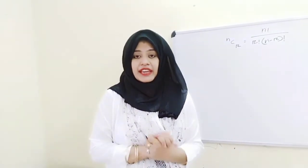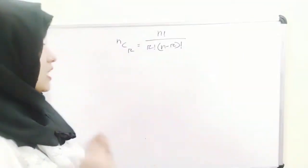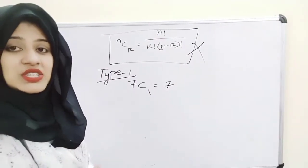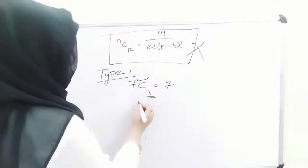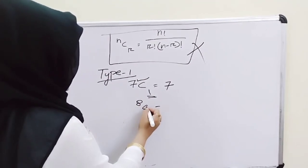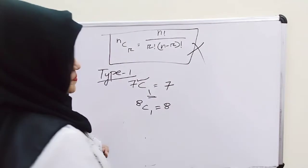For Type 1, you just cancel this formula and apply the trick. When the question is 7C1, you don't need to put everything into the formula — just write the answer 7. So when r is 1, the answer is n. For example, 8C1 equals 8.